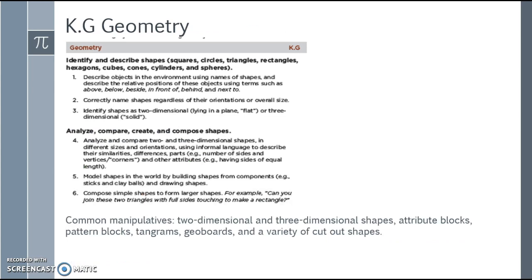The last cluster is geometry. Students need to identify and describe shapes such as squares, circles, triangles, rectangles, hexagons, cubes, cones, cylinders, and spheres — not only 2D but 3D objects. They need to describe objects in the environment using shape names and positional terms such as above, below, beside, in front of, behind, and next to. They must correctly name shapes regardless of orientation or size, identify shapes as 2D or 3D, and analyze, compare, create, and compose shapes by identifying sides, vertices, and other attributes. They should also model shapes by building from components and compose simple shapes to form larger ones.